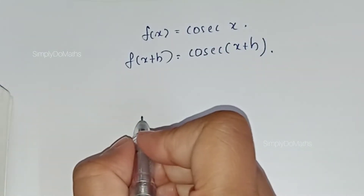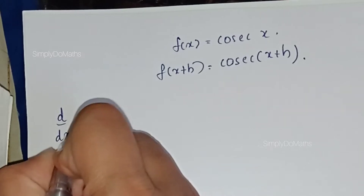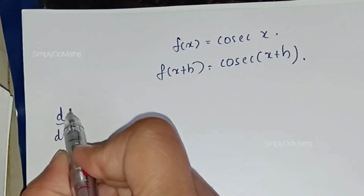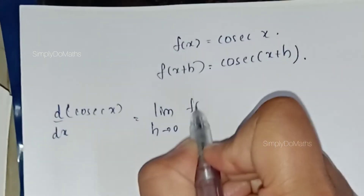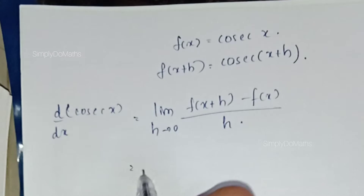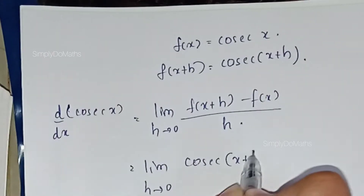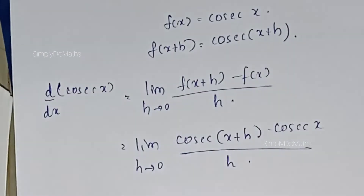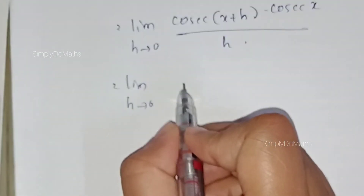According to the formula of first principle, d/dx — here x is the independent variable and the function is depending on x — d/dx of cosecant x will be equal to: limit as h tending to 0 of f(x+h) minus f(x) divided by h. So this is the formula: limit as h tending to 0, where f(x+h) is cosecant of (x+h) minus f(x) which is cosecant x.